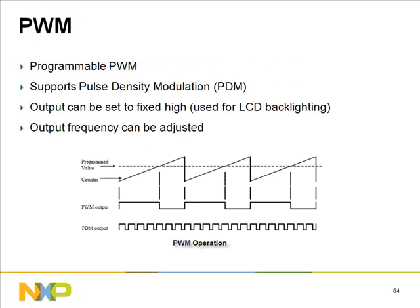The PWM module supports pulse density modulation. A PDM signal is a stream of constant-width pulses with a density proportional to a corresponding digital value. The image provides a snapshot of both PWM and PDM generation.